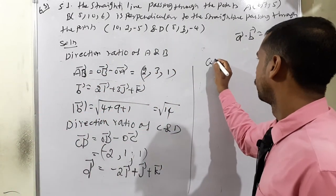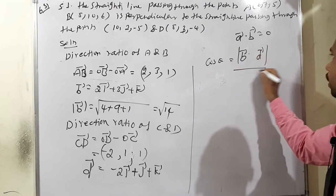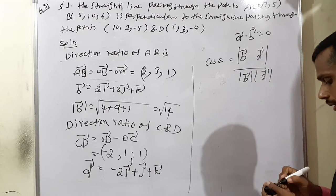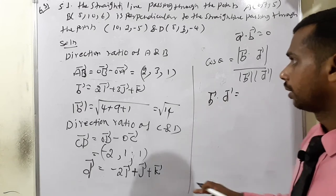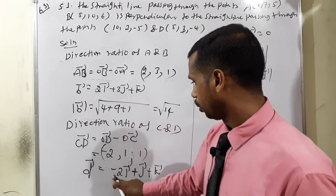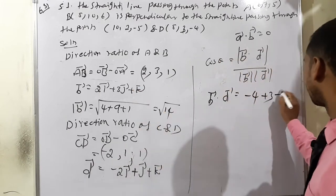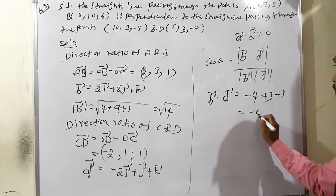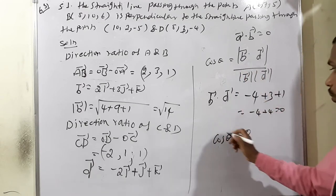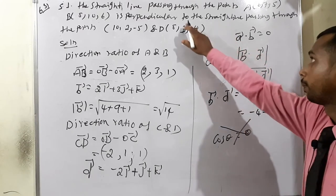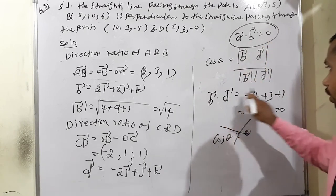According to the formula, cos theta equals b·d divided by modulus b times modulus d. First, b·d equals 2 times negative 2 equals negative 4, plus 3 times 1 equals 3, plus 1 times 1 equals 1. So negative 4 plus 3 plus 1 equals 0. Since b·d equals 0, cos theta equals 0, therefore the lines are perpendicular.